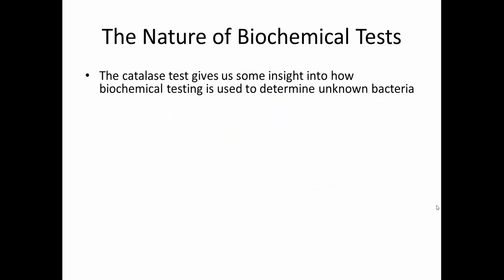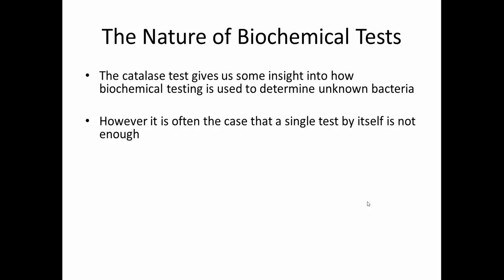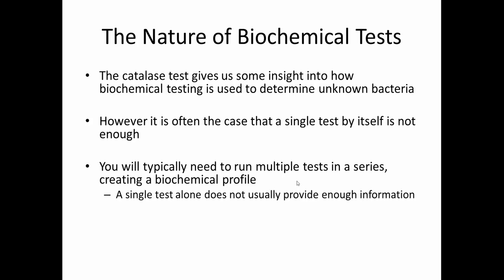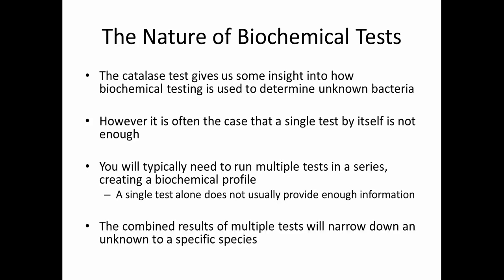This is the nature of biochemical testing — the catalase test gives us insight into how it can work. The problem is that usually one test by itself isn't enough to give us all the information we need. Individual tests tell us one thing about a bacterium — it's sort of like asking a yes or no question: do you produce catalase? To learn more, we run more tests, and each test is like asking another yes or no question. Typically what you need to do is run multiple tests together in a series — all at once — and this creates what's called a biochemical profile: a combination of results that, when added up, can narrow down or point to a specific species.